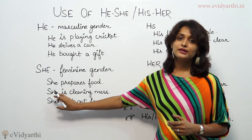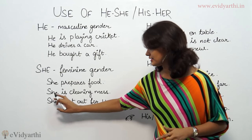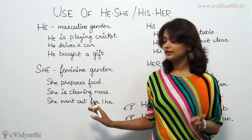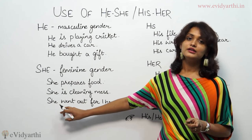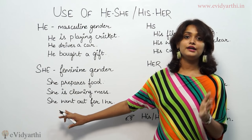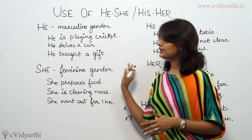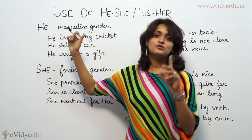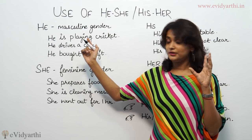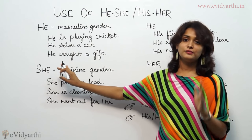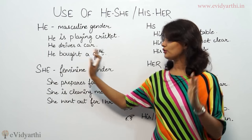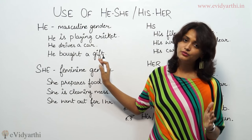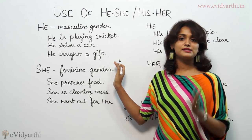Immediately after 'she' you have seen the auxiliary verb is written. 'She went out for one hour' — after 'she,' immediately what follows is 'went,' which is again an action or main verb. So in this way we have seen that in each sentence when we write he or she, 'he' is known as masculine gender and 'she' is used for any female, which is feminine gender. After he or she, we immediately put a verb in the sentence — whether it is an auxiliary verb or an action verb, it is compulsory.